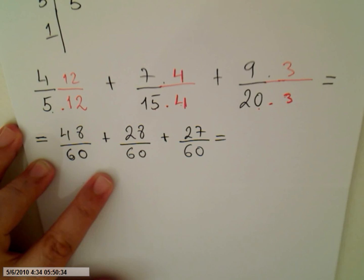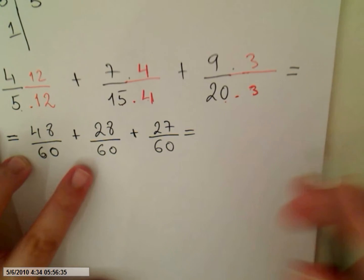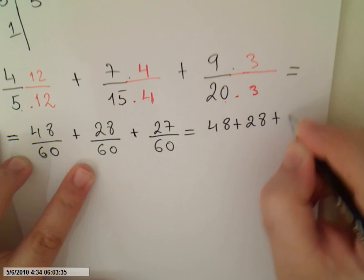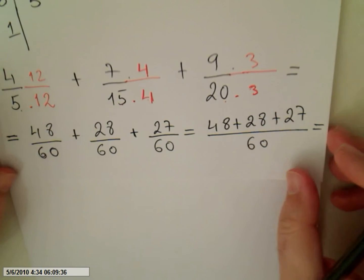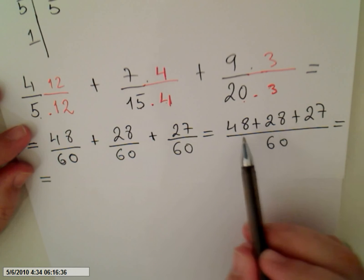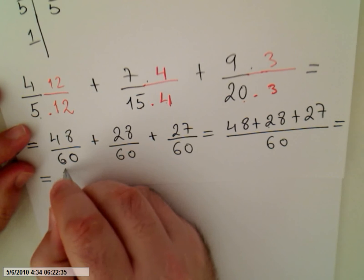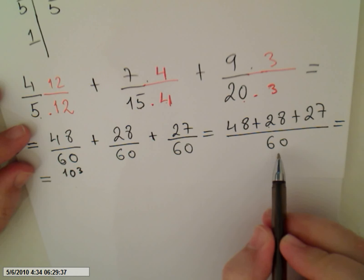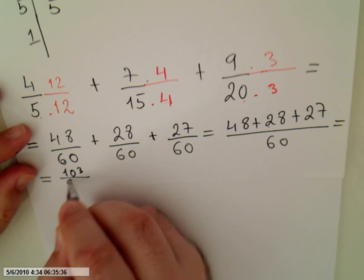Okay, we are okay now. So we have 48 plus 28 plus 27 over 60. Well, you guys can do it. 6, 8, if I'm not wrong I'll get 103. Please check. Over 60.